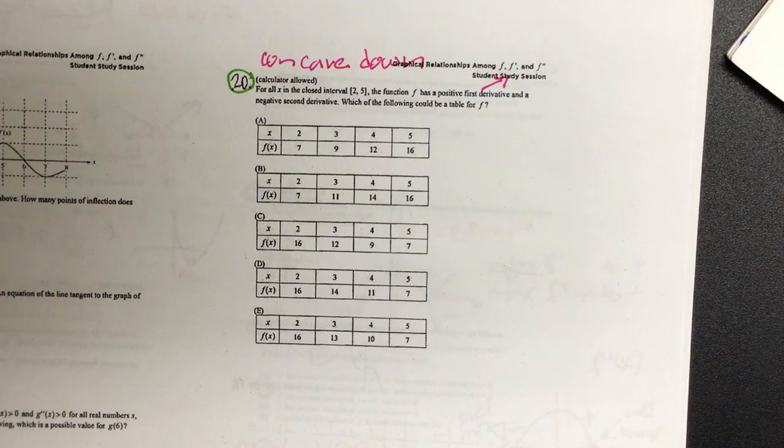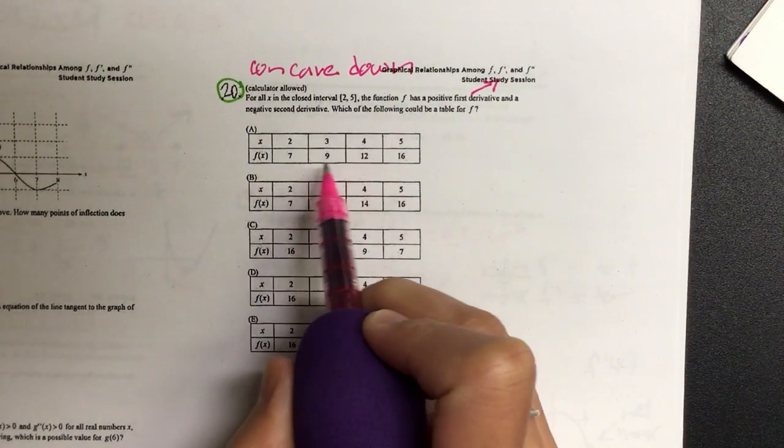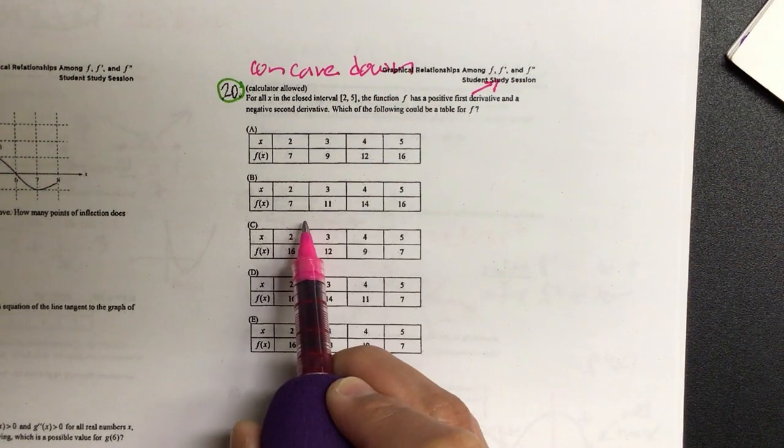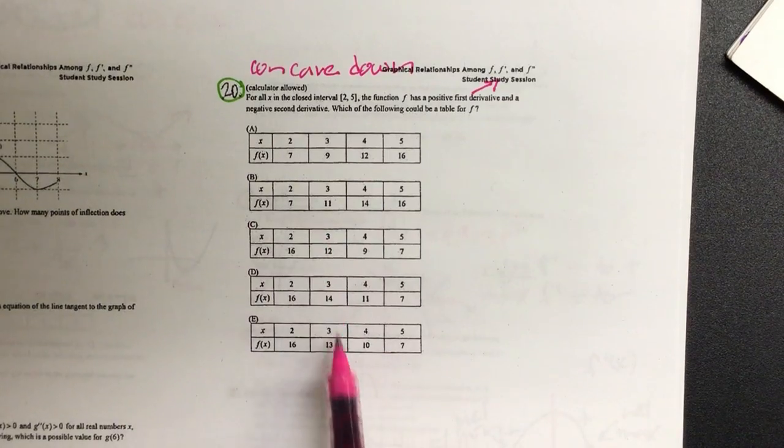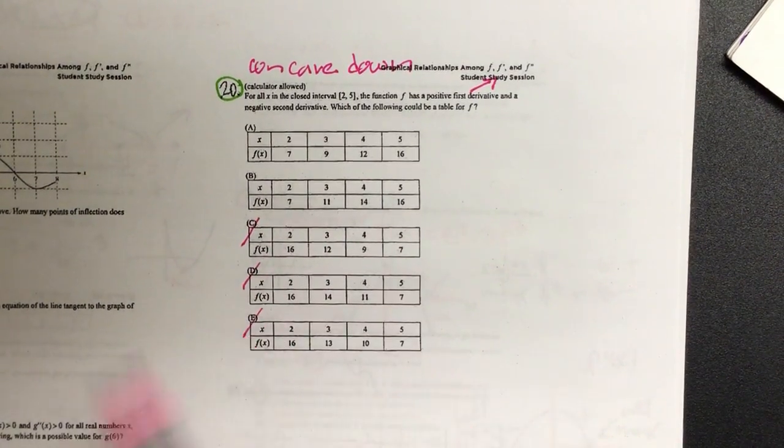So let's first look at the first derivative. It should be increasing. So looking at 7, 9, 12, 16, is it increasing? Yeah. Is B also increasing? Yeah. What about the rest of them? No. They're not increasing, so that's not going to satisfy the first derivative.